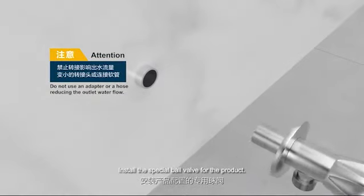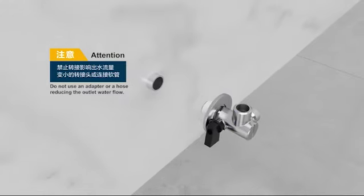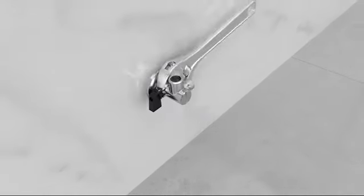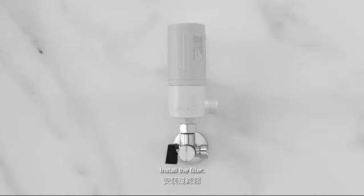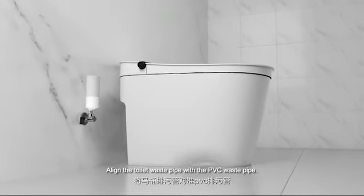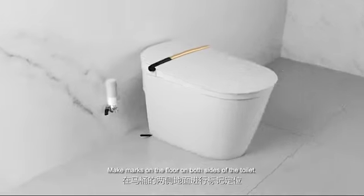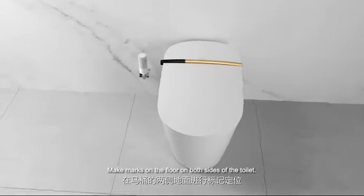Install the special ball valve for the product. Wrap the PTFE tape. Install the filter. Align the toilet waste pipe with the PVC waste pipe. Level the toilet with the floor. Make marks on the floor on both sides of the toilet.